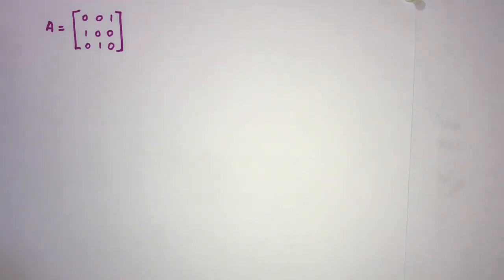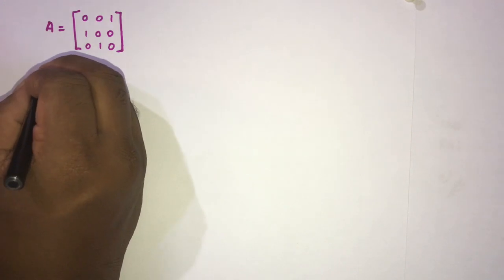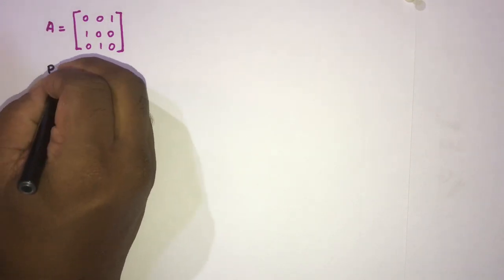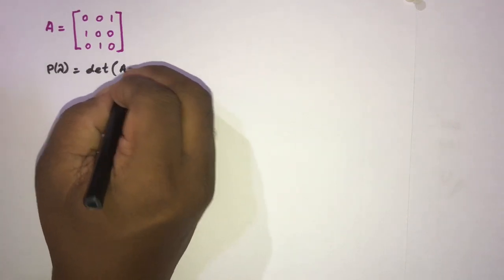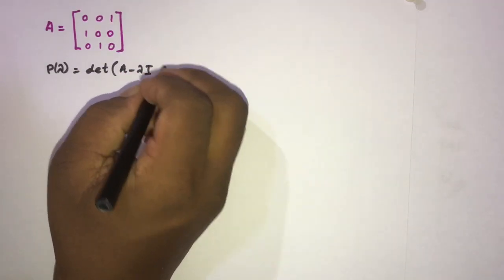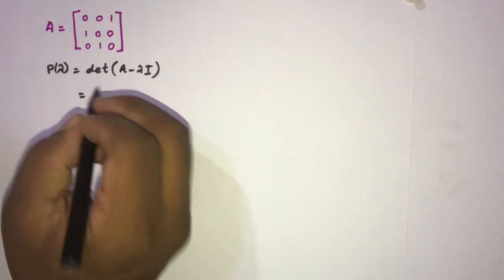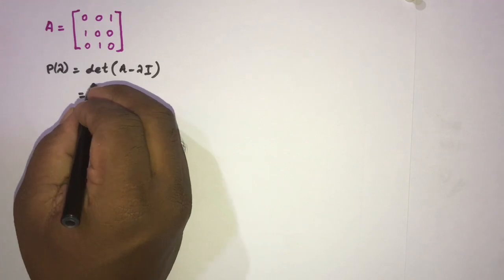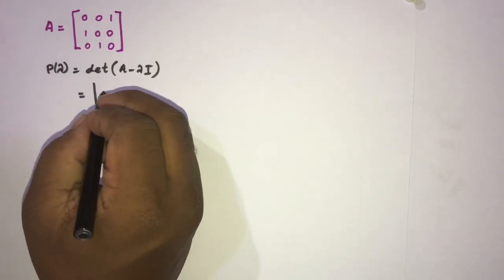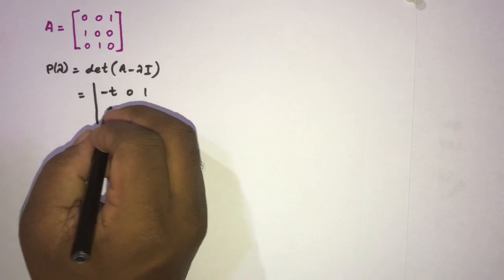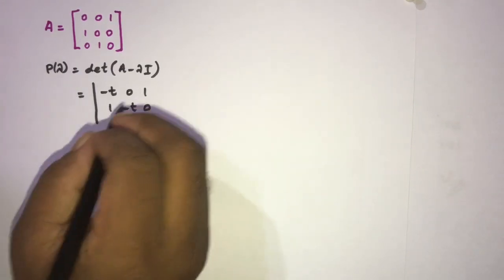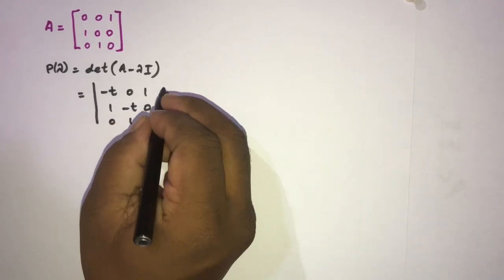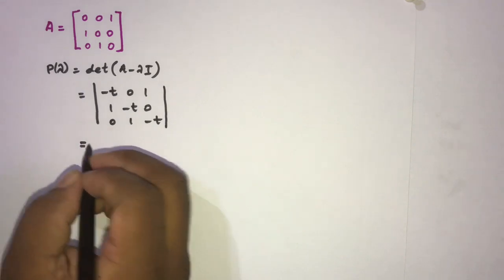First we are going to find the characteristic polynomial. We can write P(λ) equal to the determinant of A minus λ times I. So we write out the matrix A minus λI with entries: minus t, 0, 1 in the first row; 1, minus t, 0 in the second; and 0, 1, minus t in the third row.